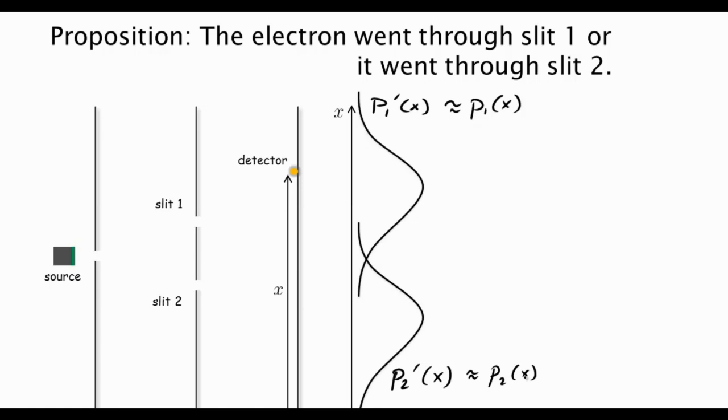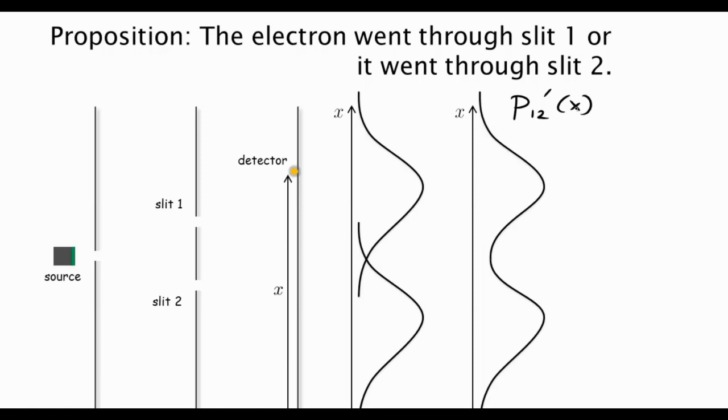But now since both slits are open, surely the probability of an electron ending up at x is really the sum of P1 prime and P2 prime. We can look at P12 prime of x, which is the total number of electrons that end up at x, and it's exactly P1 prime of x plus P2 prime of x. And it's not equal to the interference pattern. So if we can tell which slit the electron goes through, then the interference pattern disappears. This is a very strange thing.